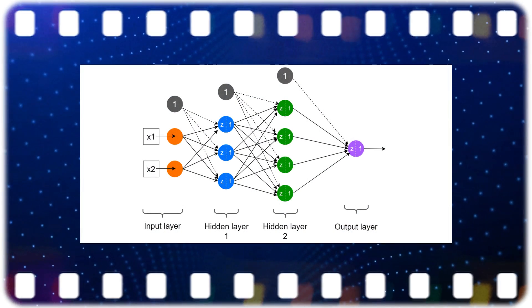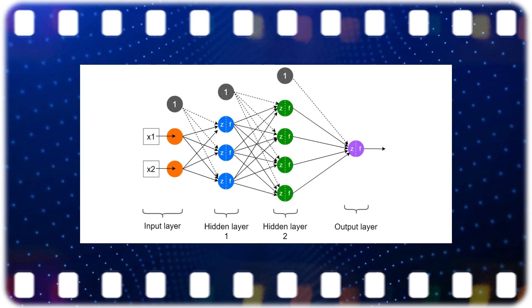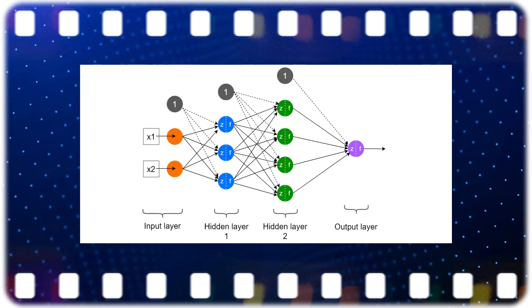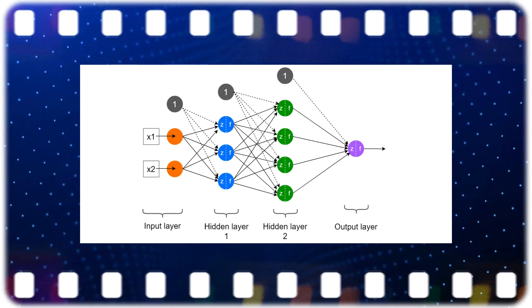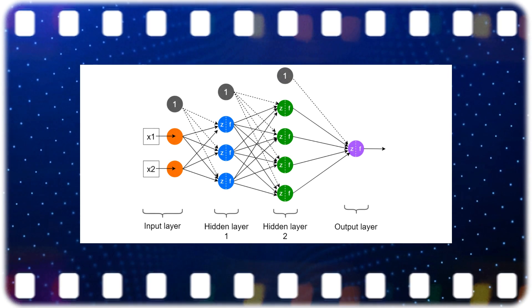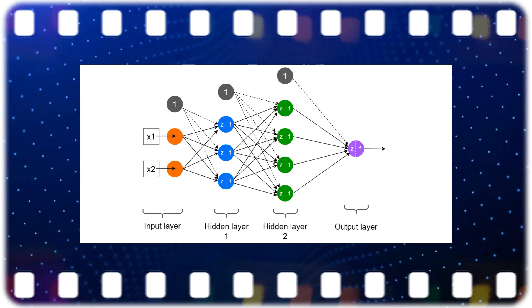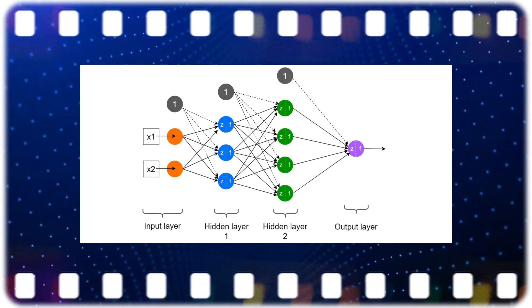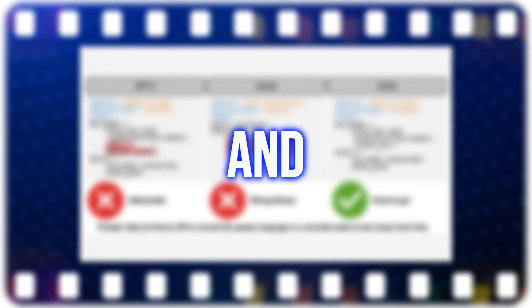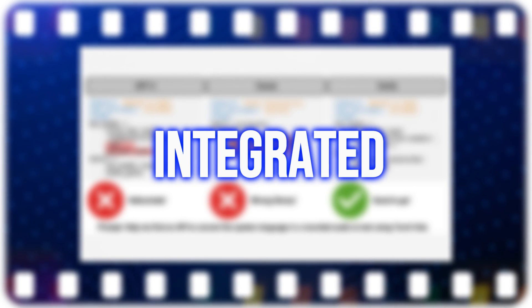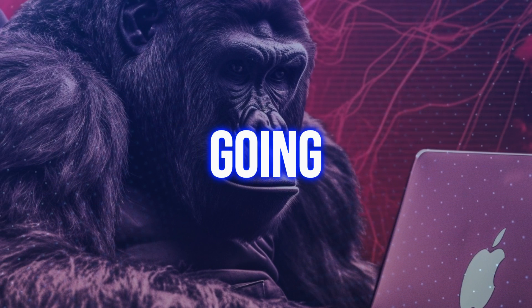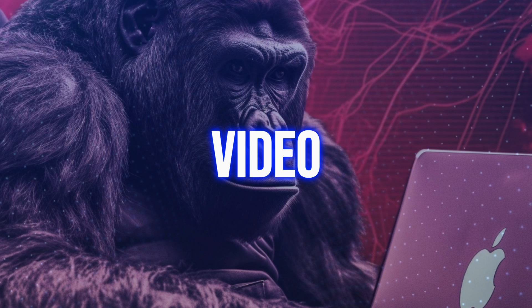It uses a large neural network, which is a collection of mathematical functions that can learn from data. The neural network has many layers, each of which performs a different operation on the text data. The layers are connected by weights, which are numbers that determine how much each layer influences the next one. It's designed to work as part of a wider ecosystem and can be flexibly integrated with other tools. Keep watching, because we're going to tell you how to access it later on in the video.